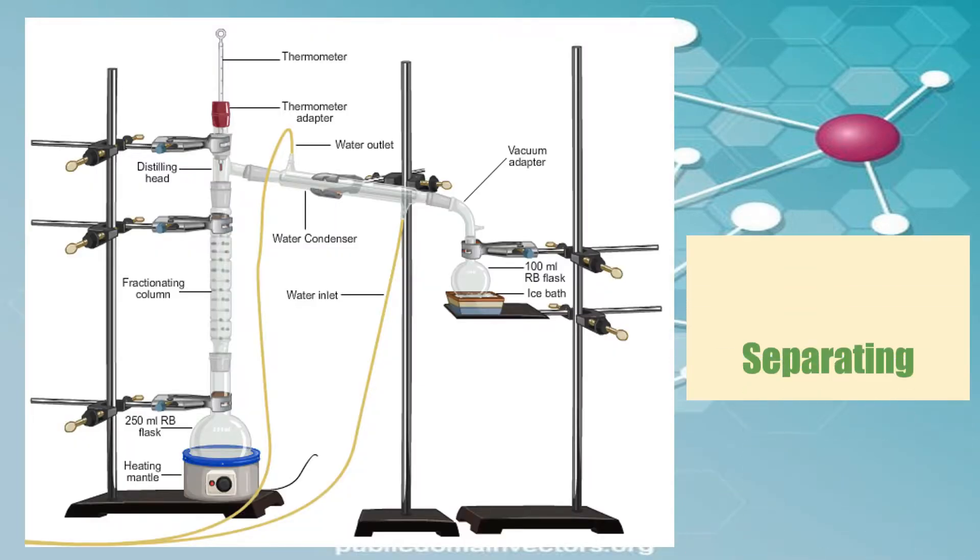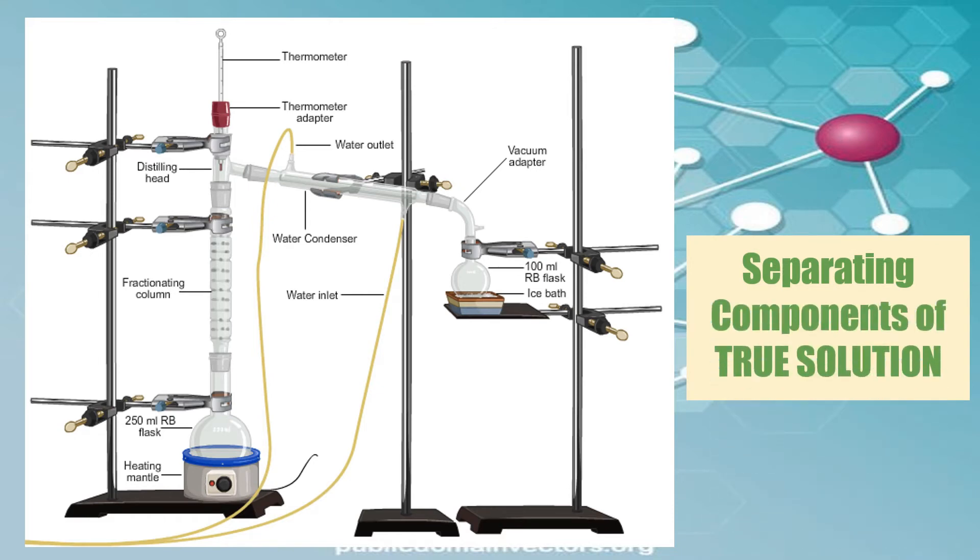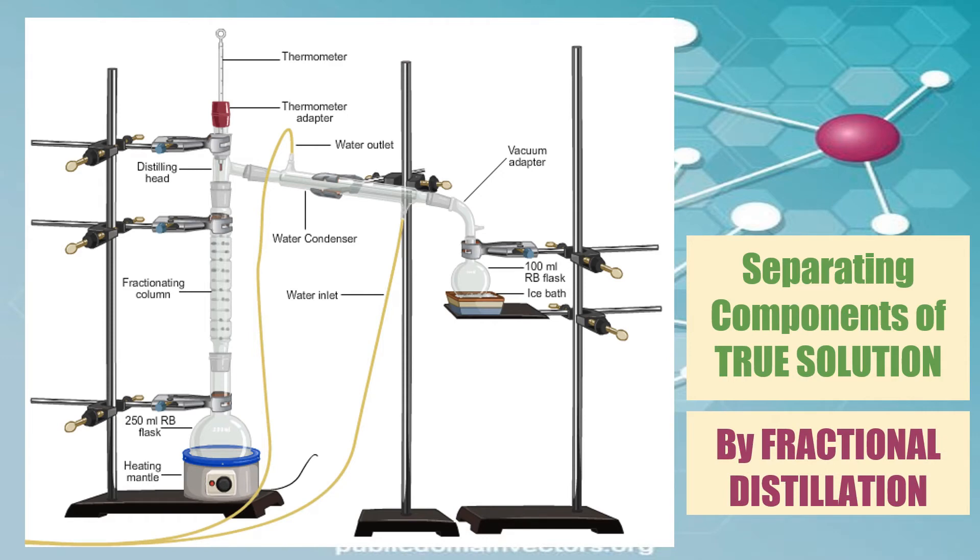To separate the components of true solutions with two or more miscible liquids and different boiling points, we are going to use fractional distillation. This is also the same with simple distillation. The difference is that a fractionating column is fitted between the distillation flask and the condenser. A simple fractionating column is a tube packed with glass beads. These beads provide surface for the vapors to cool and condense repeatedly.